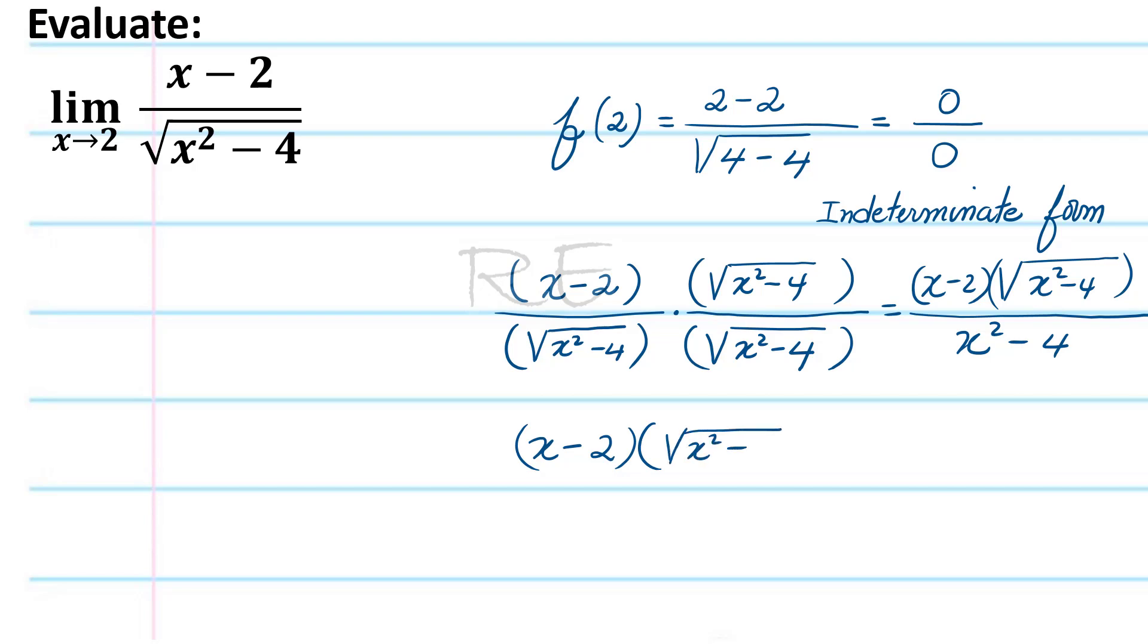So keeping the same numerator, we will factor the denominator, difference of two perfect squares: x minus 2 times x plus 2.